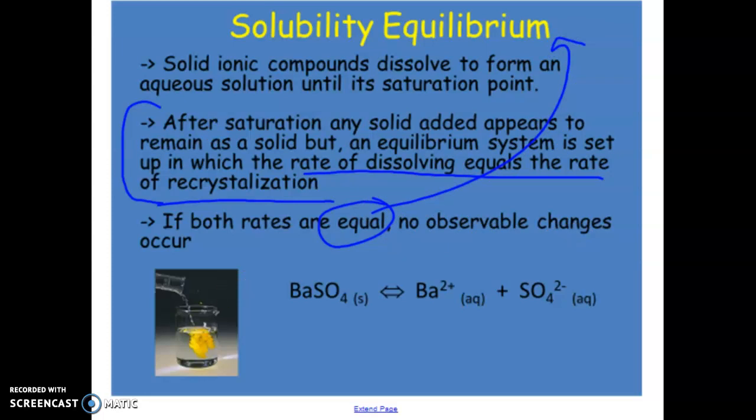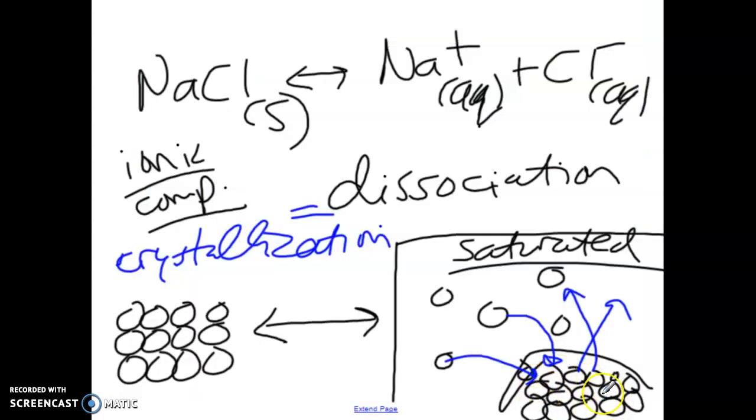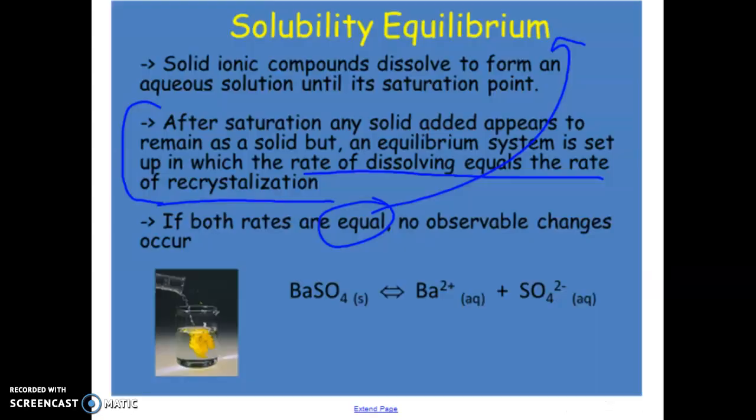If both rates are equal, which means you have equilibrium, no observable changes will occur. You might say to yourself it looks like there's this clump at the bottom, it's not changing, it's not moving, it's been there for a couple of hours now. It is always changing. It's just that to our eyes, we're talking about the molecular level. To our eyes, it appears to be unchanged.